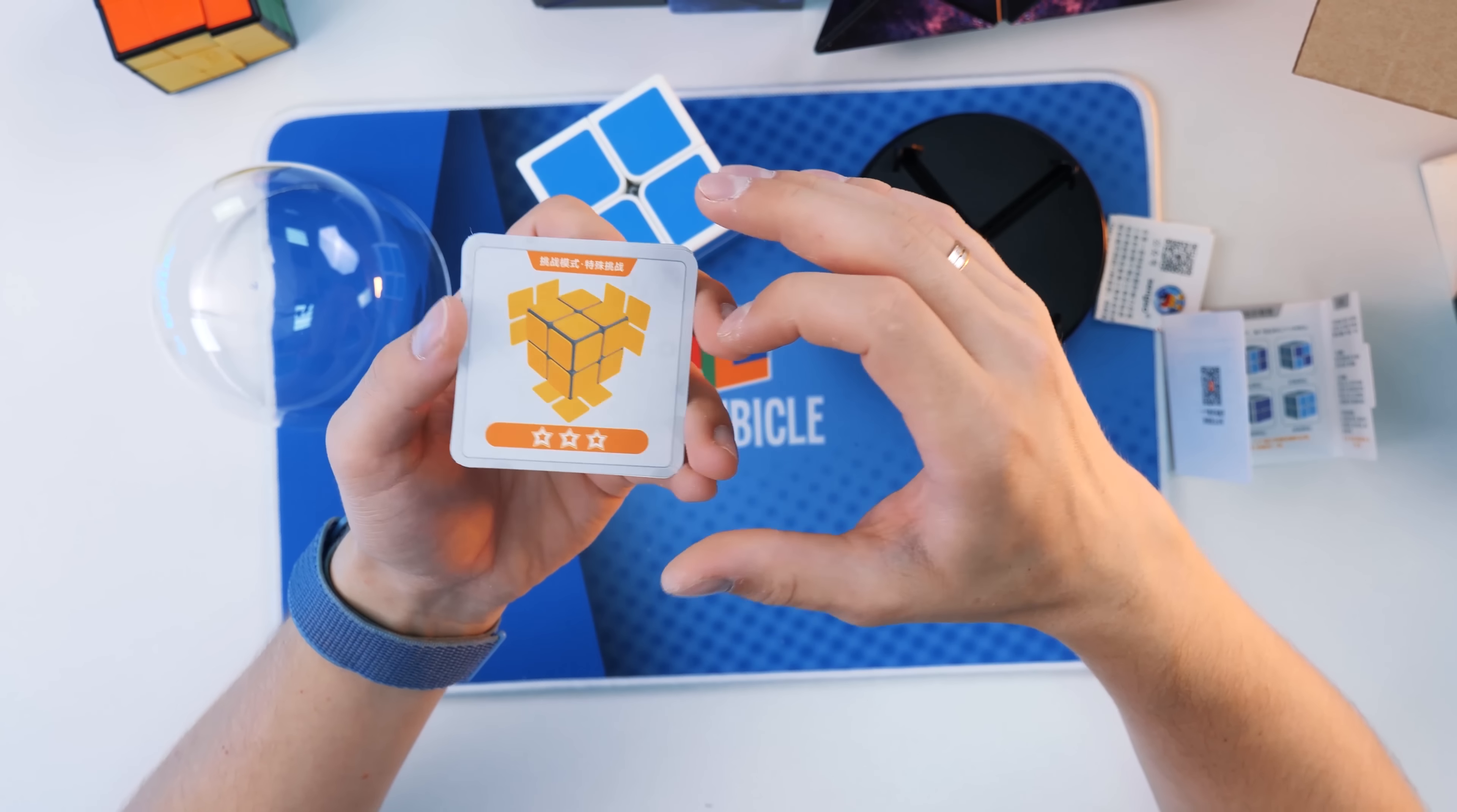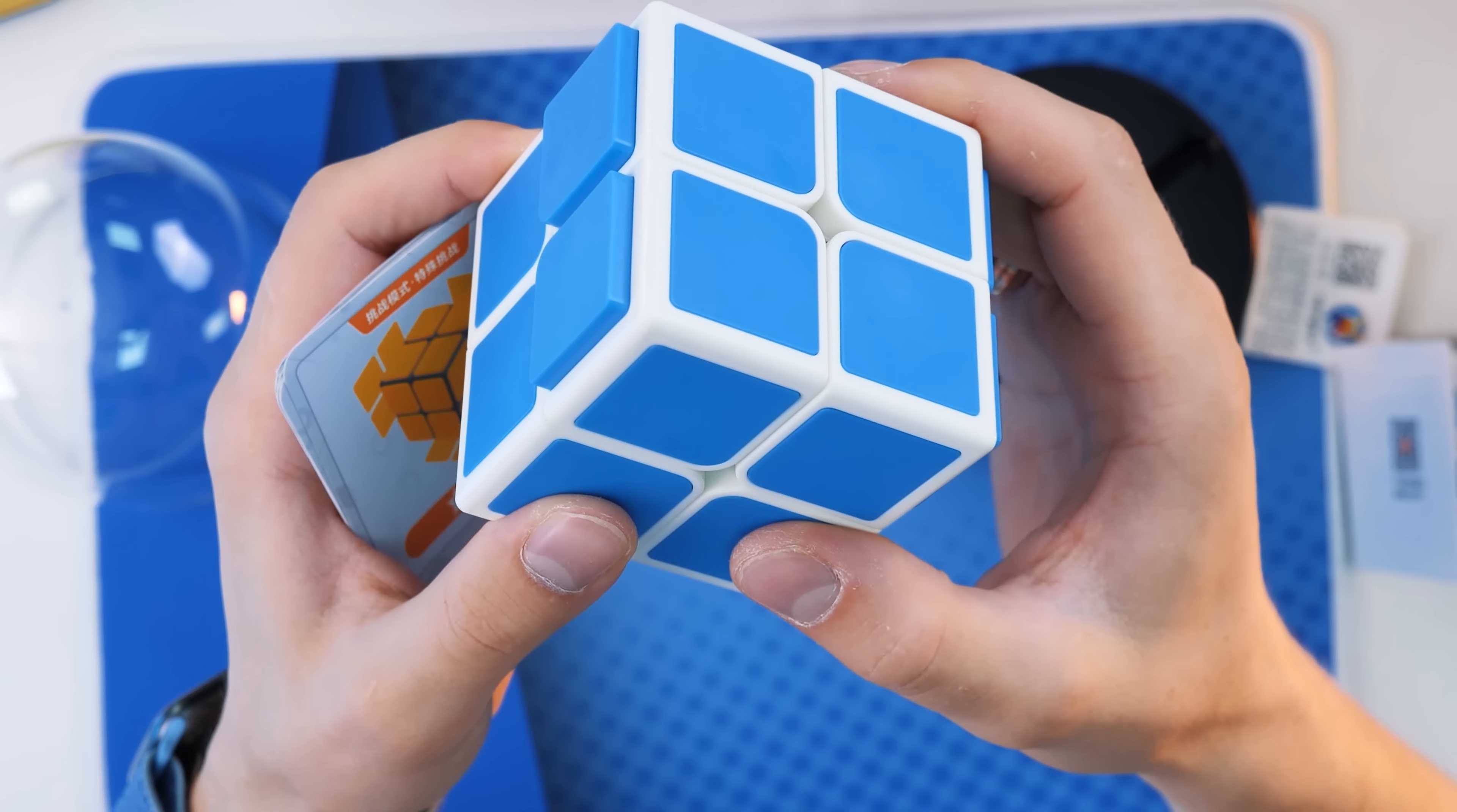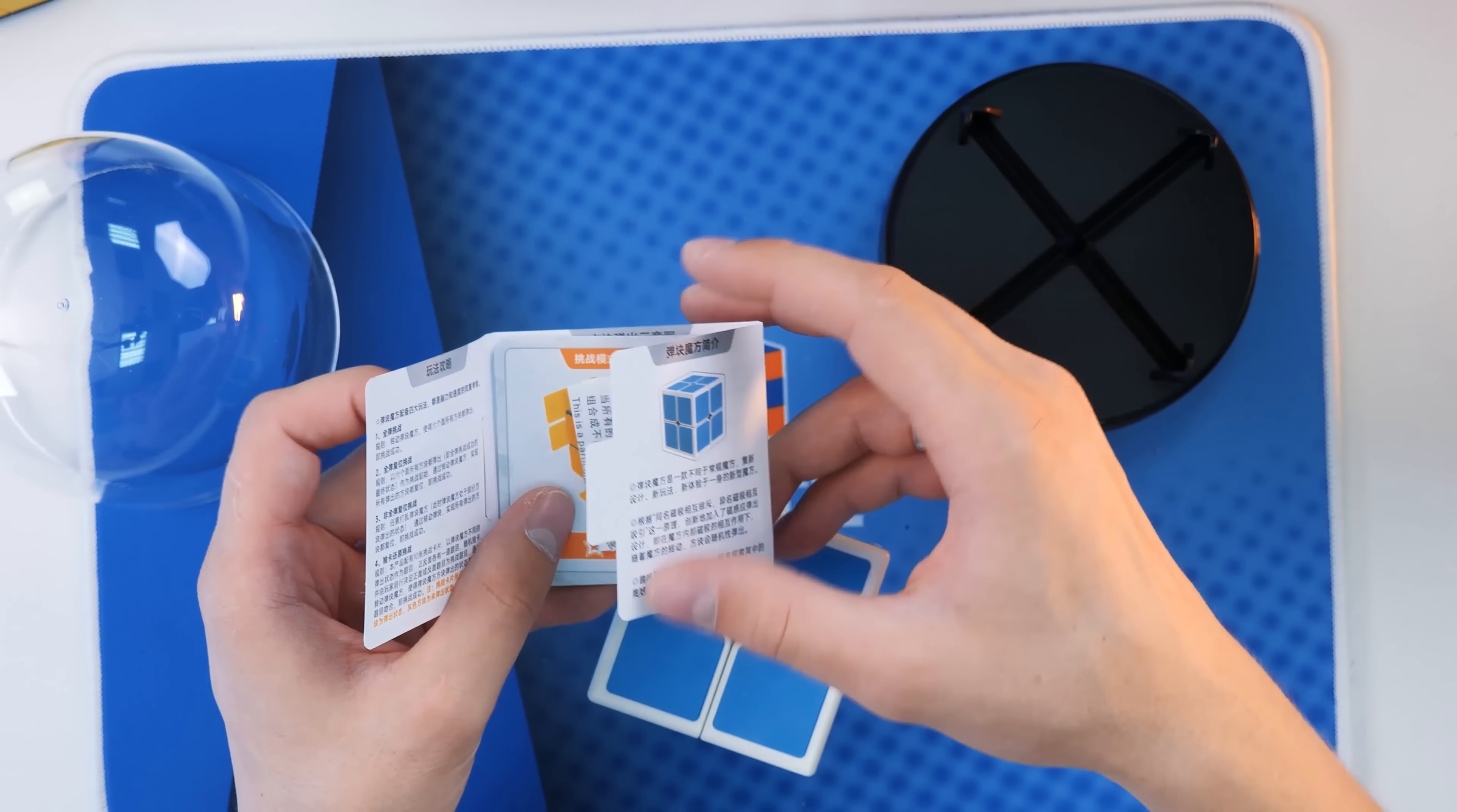It would be very interesting to learn how this Rubik's Cube works. Because I have no idea. The hardest level here is to make all the elements stick out on each side like this. And it's very difficult to do it, because I don't understand how it works. But it's probably one of the most unusual and interesting Rubik's Cubes I've ever held in my hands.